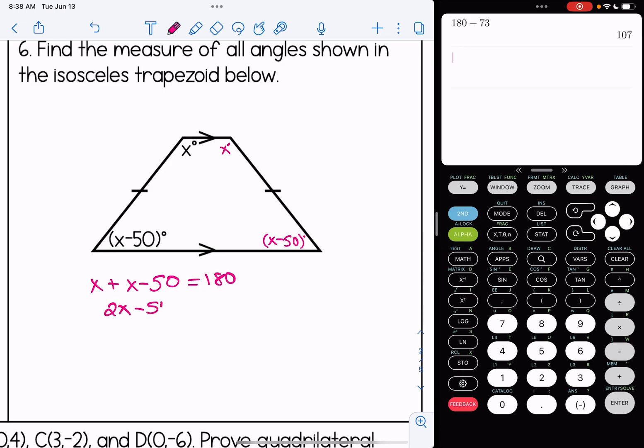Let's combine like terms. I'm going to add the 50 to the other side, trying to isolate our variable here. And I get that x is 115.